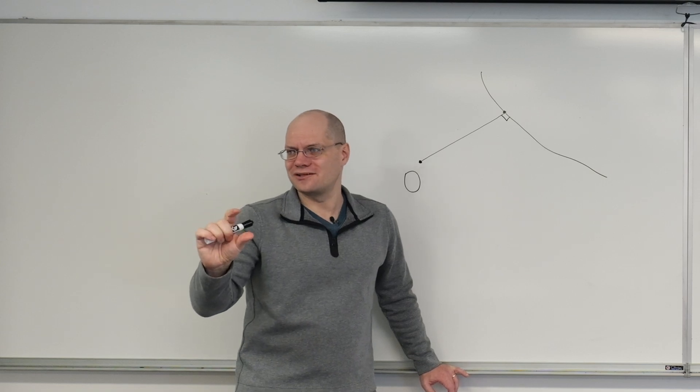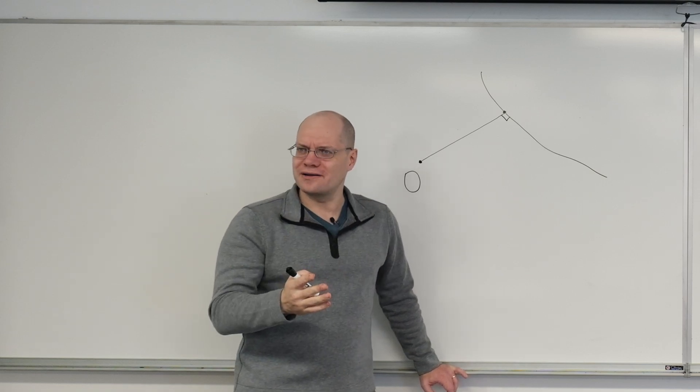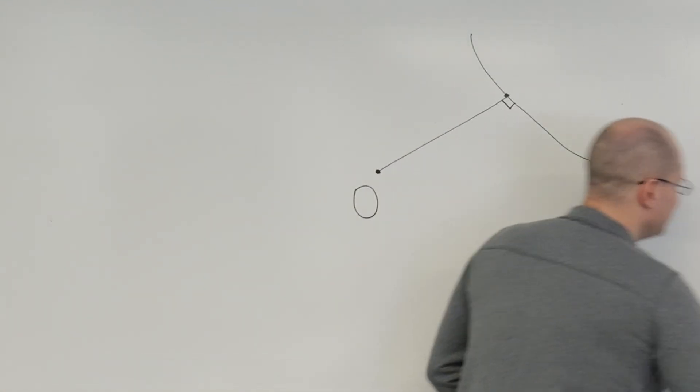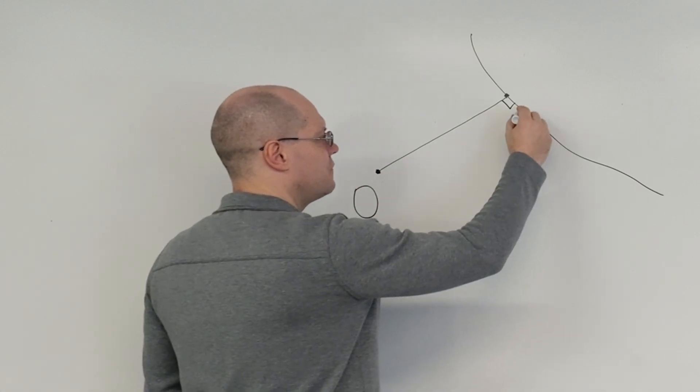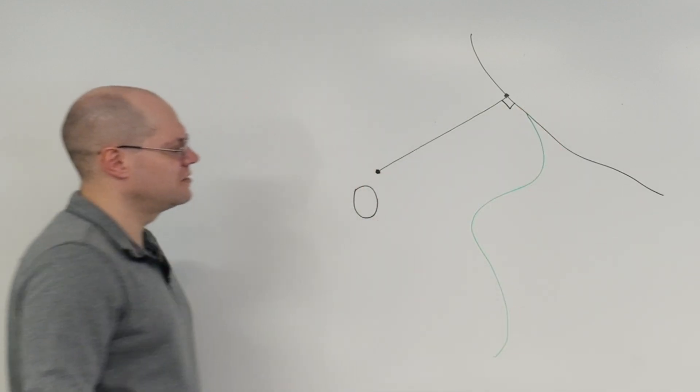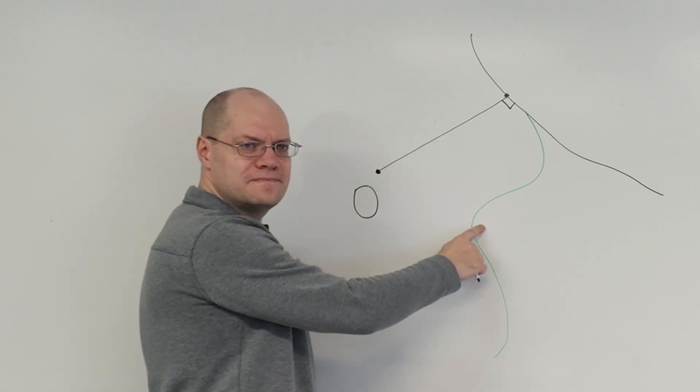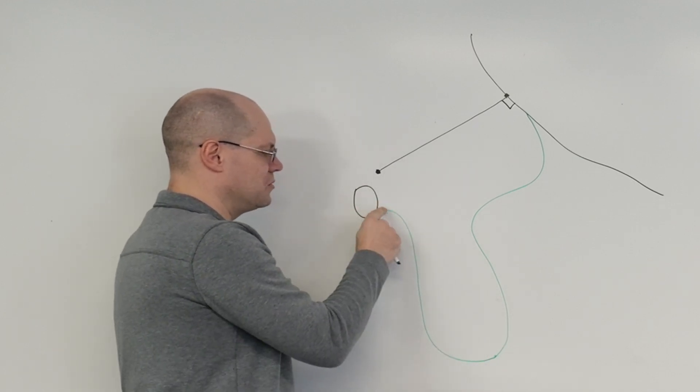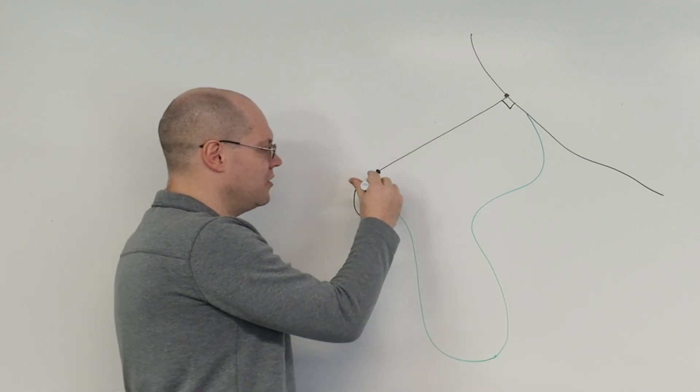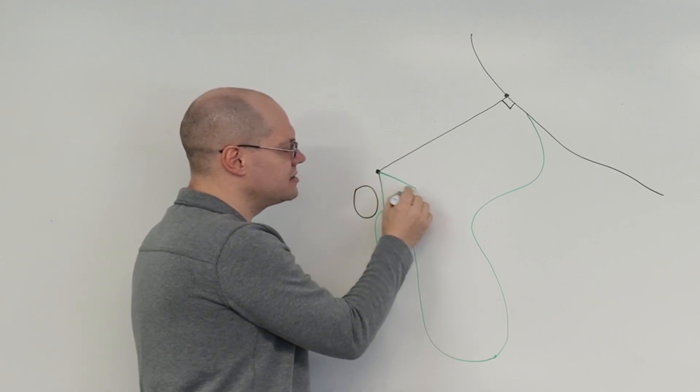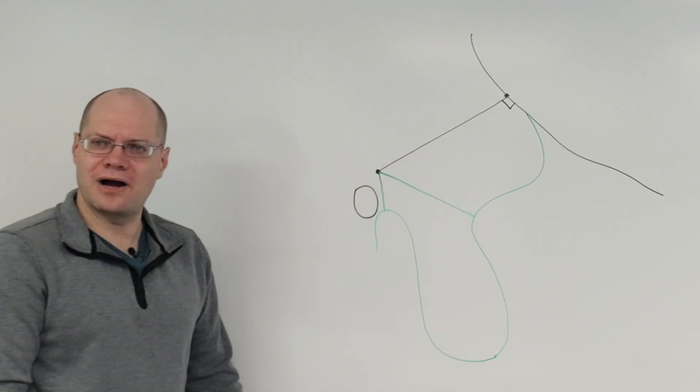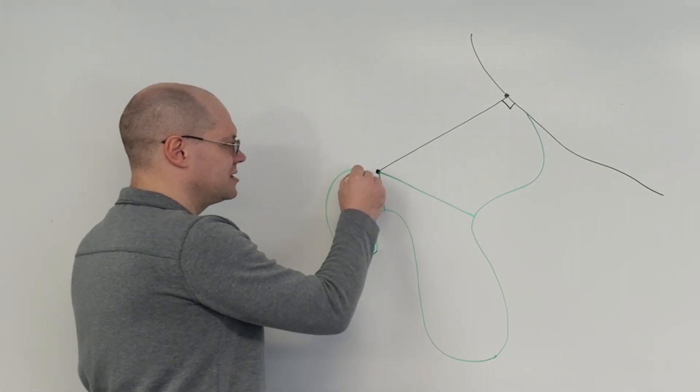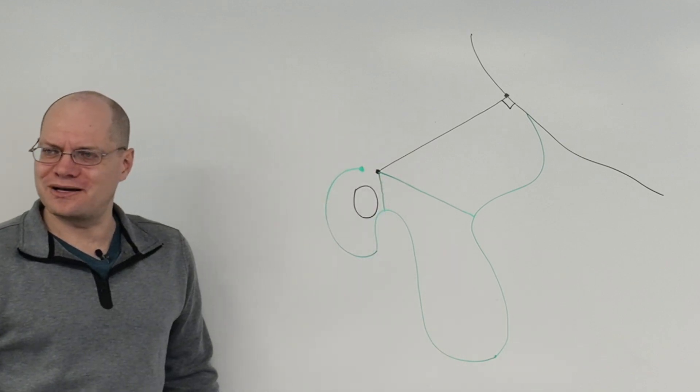So a couple quick disclaimers. Number one, it's a local property. If you imagined that a curve, should I draw it? If the curve looked like this, then it would be this point. And let's see. And then if it went like this, then maybe it would be this point. Right? And all of these points are characterized by the same geometric property. And then also, if the curve went like this and stopped here, then it would be this point and it would be characterized by the same property.